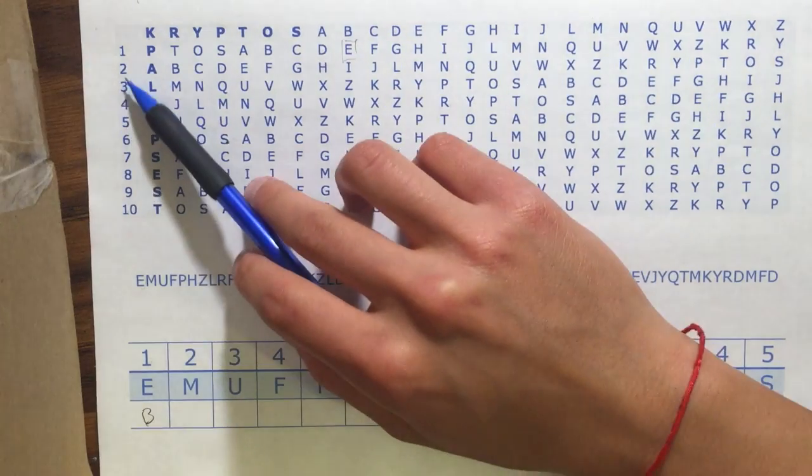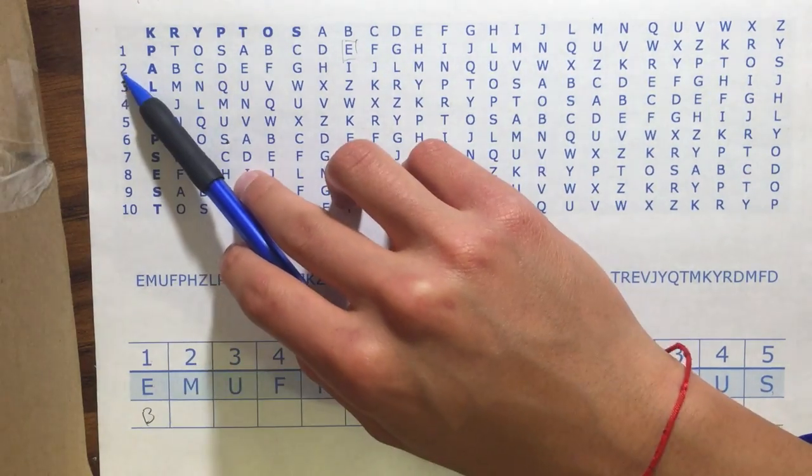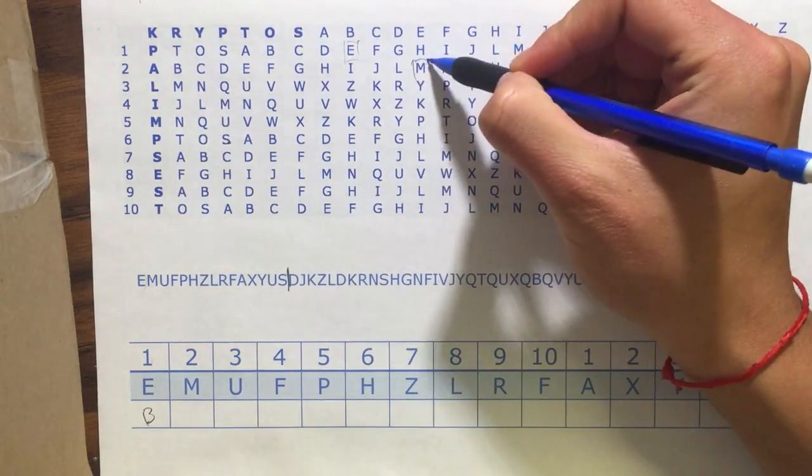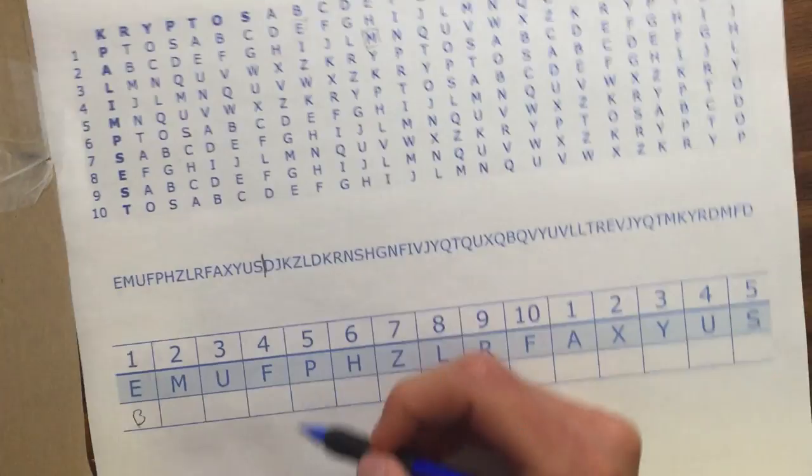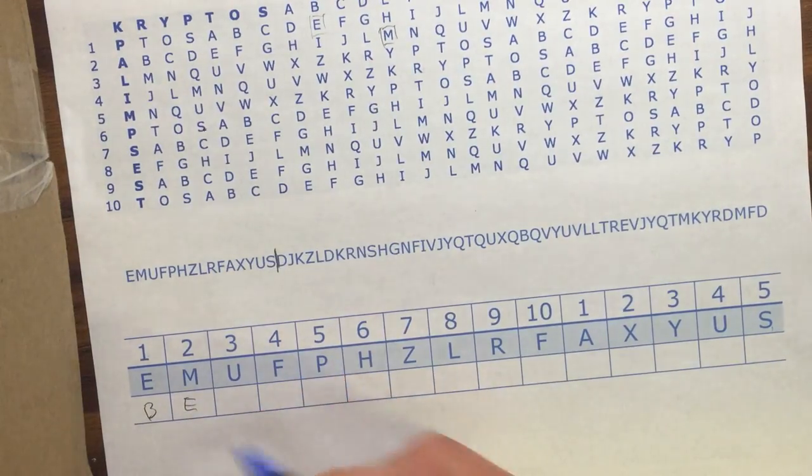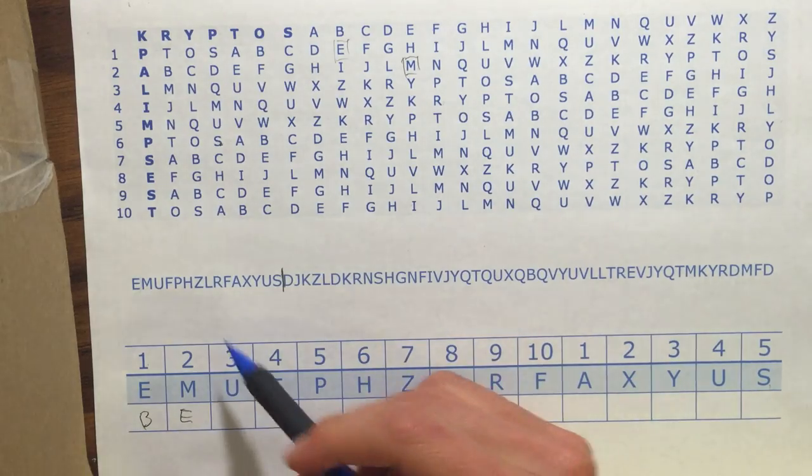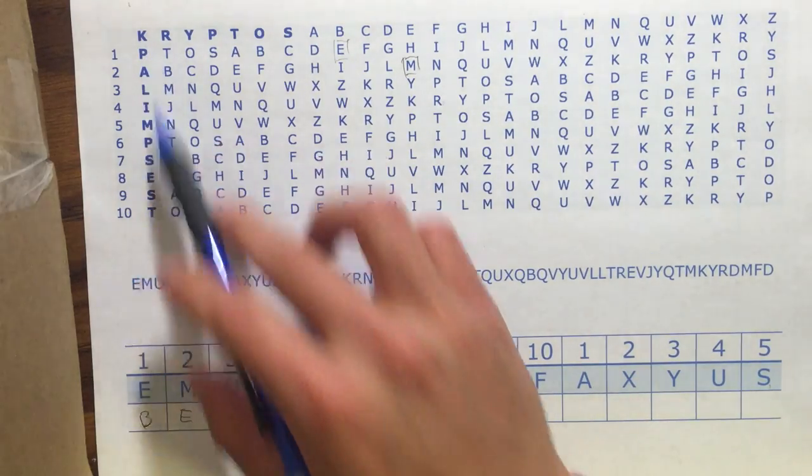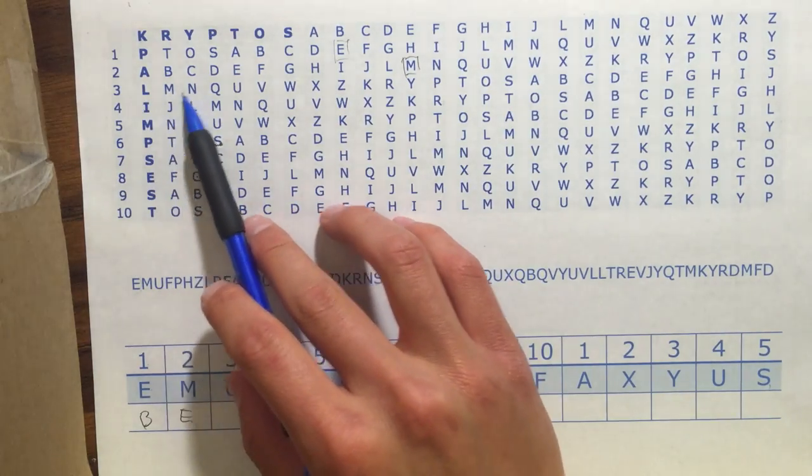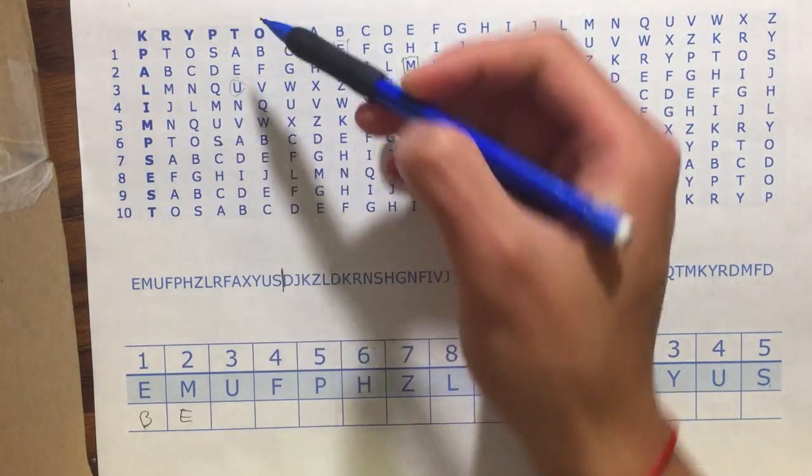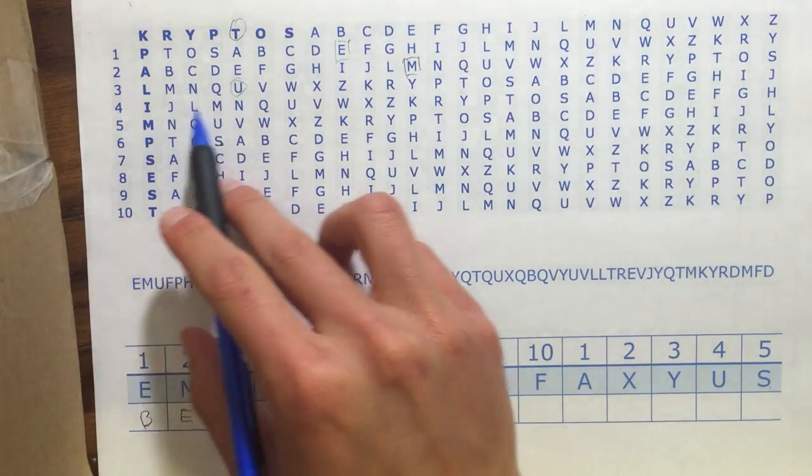Now letter M in the second row. It's the second letter so you go to the second row, find M, go up to the default alphabet and find letter E. So you write down E. And then you do this with all the letters. So let's continue. U in the third row, write down T. F...